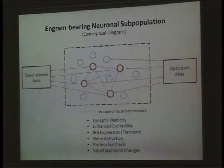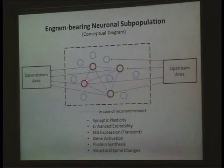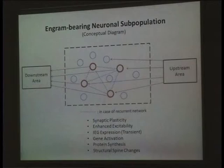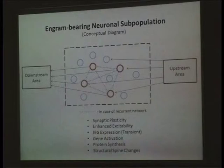Some of these cells, shown in red, undergo what is called physical or chemical changes, and the result of that information is stored there. Those cells do not have to be physically connected to each other — they may be, but they don't have to be. The kinds of changes considered to take place include synaptic plasticity, including LTP, and possibly enhanced excitability of the neuron — not just a synapse, but of the neurons.